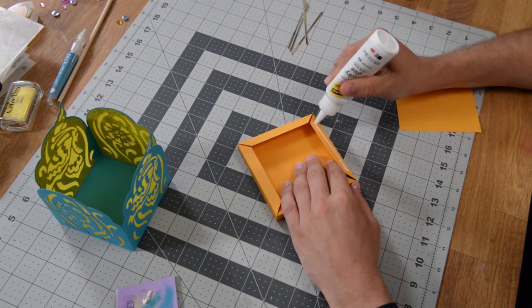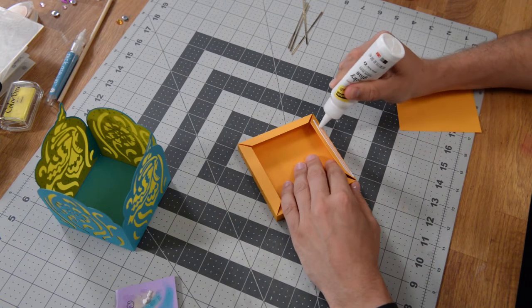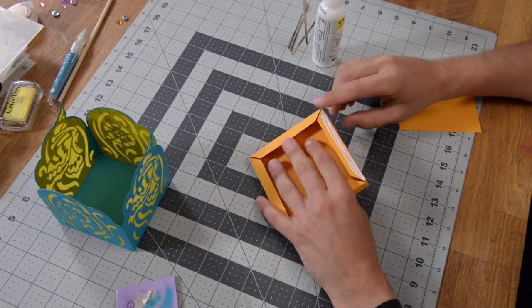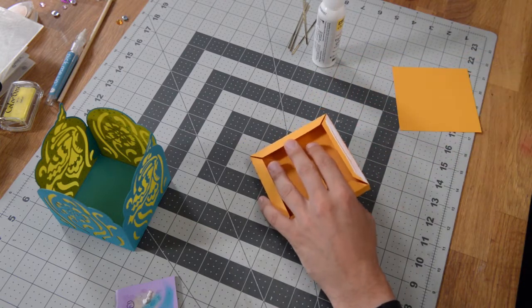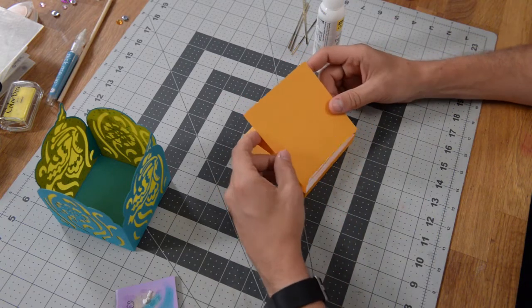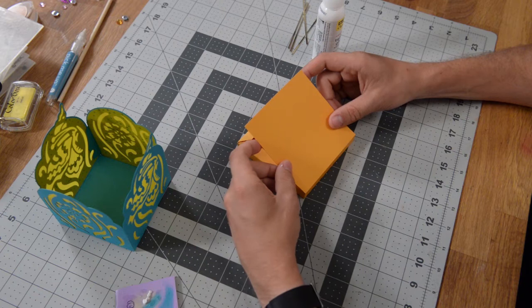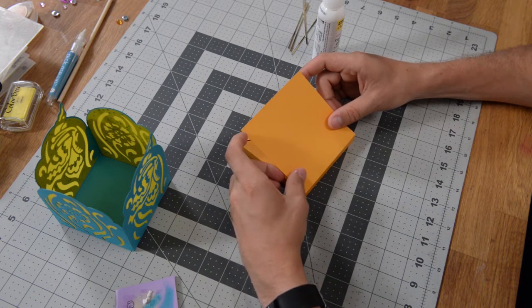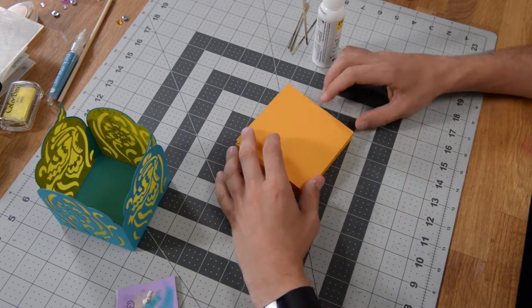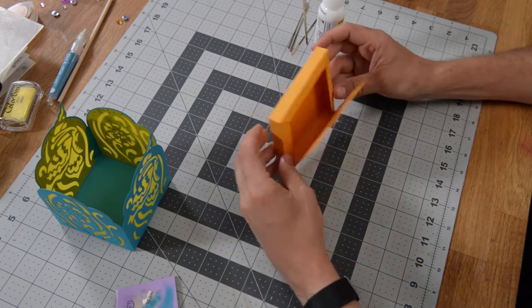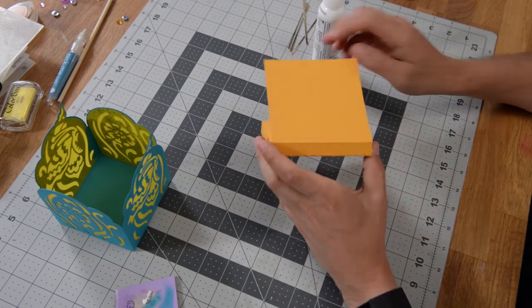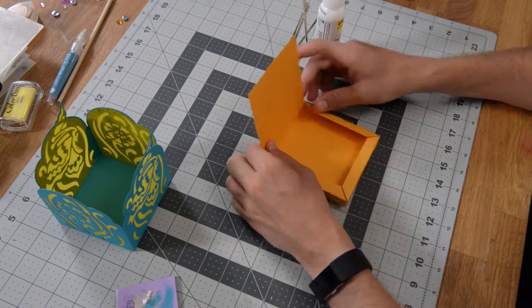We can flip it over and just repeat the process. We're going to start with one side. I always like to start with one side instead of trying to do all four sides at once. At least we know that we'll have one side that is anchored properly and is perfect, and that kind of sets the tone for the remainder of the sides. Get it nice and lined up, push down, give it a few seconds to get an initial hold, and then you can push down on the tab from the inside. Got another beautifully clean seam.